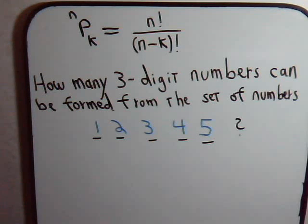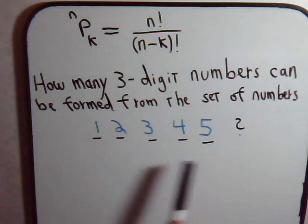In this video we want to consider this permutation problem. Here we have a set of numbers: 1, 2, 3, 4, 5. The first question we want to ask is how many different three-digit numbers can we form from this set of five numbers?